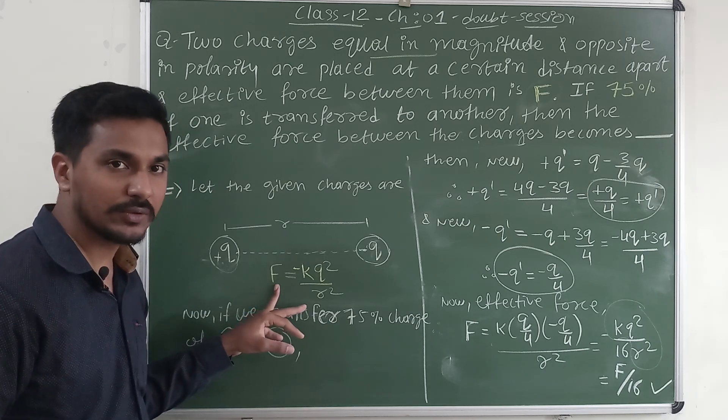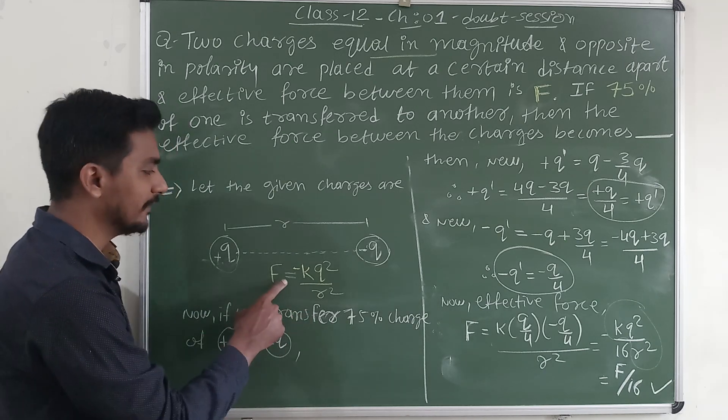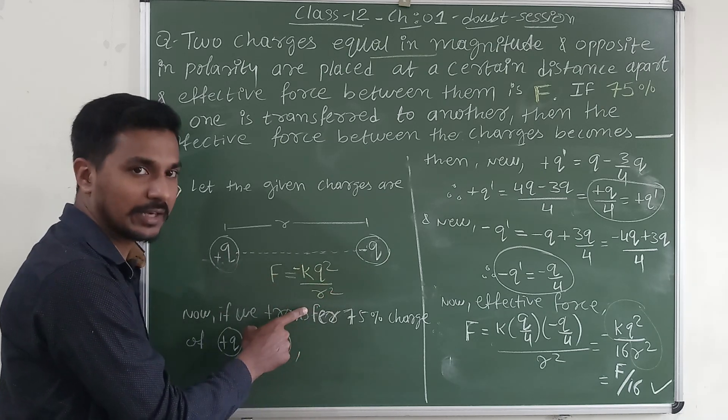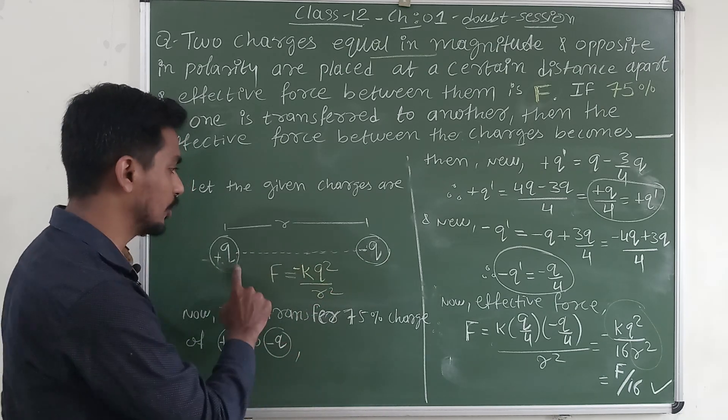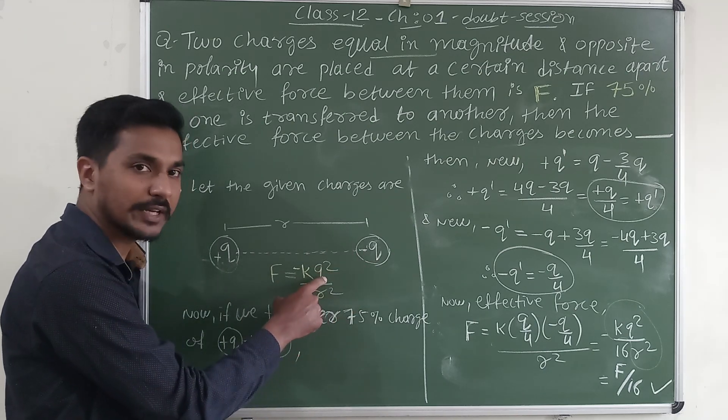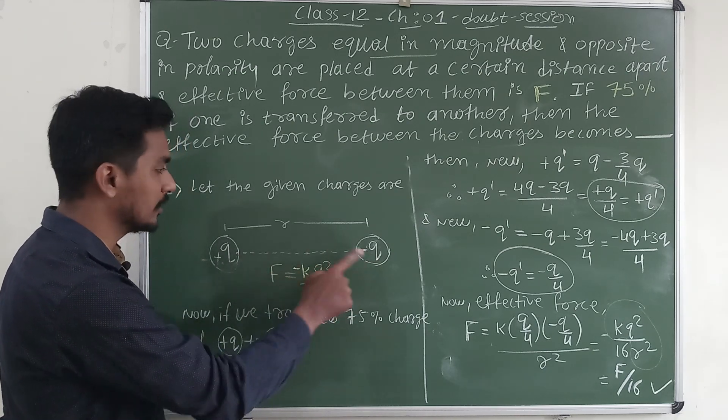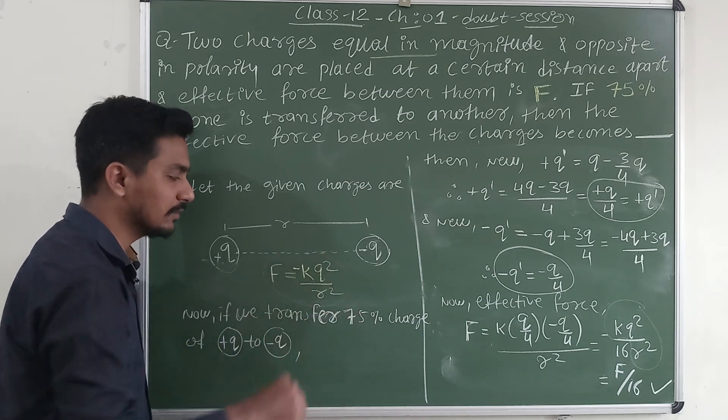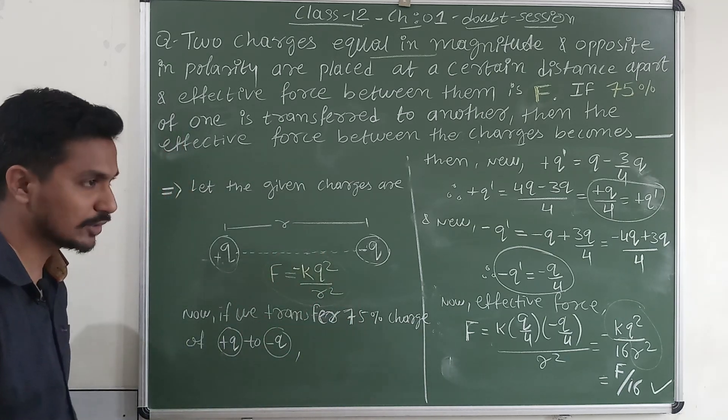By using Coulomb's law we can calculate the effective force. F equals K into Q1 Q2 by R square, but here both have same magnitude. Q into Q we will get Q square, and one is plus another is minus. The net force we will get F equals minus KQ square by R square.